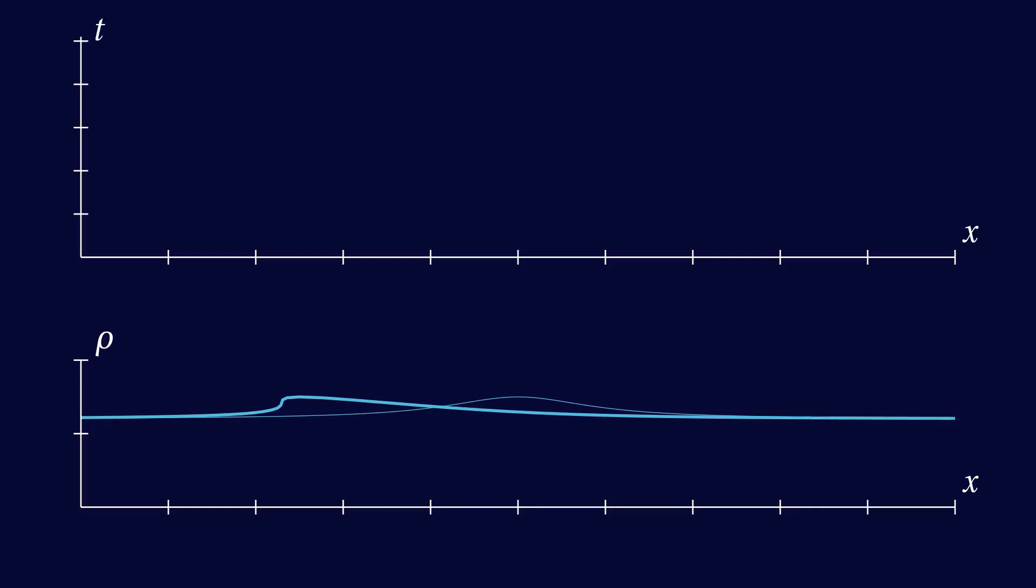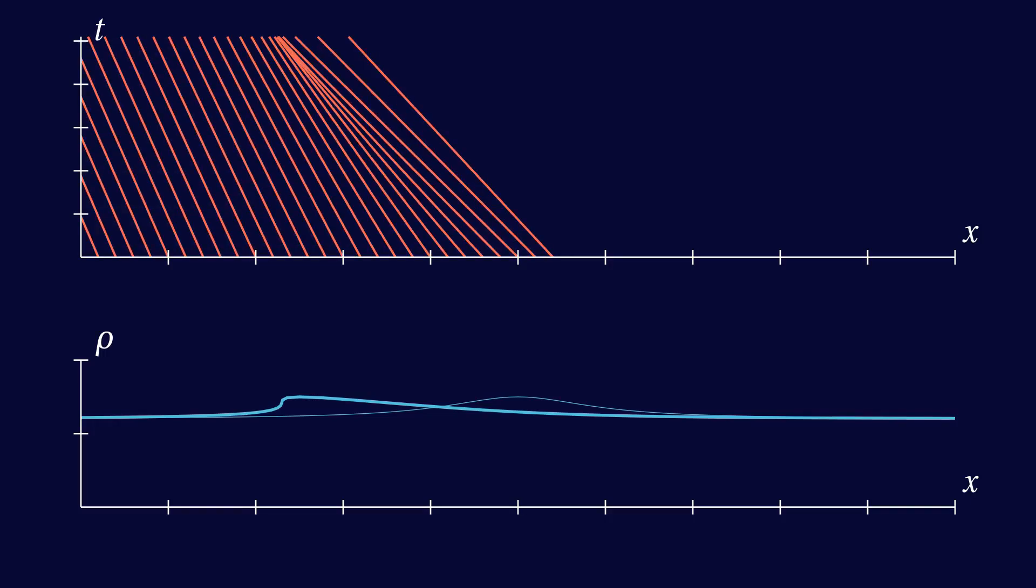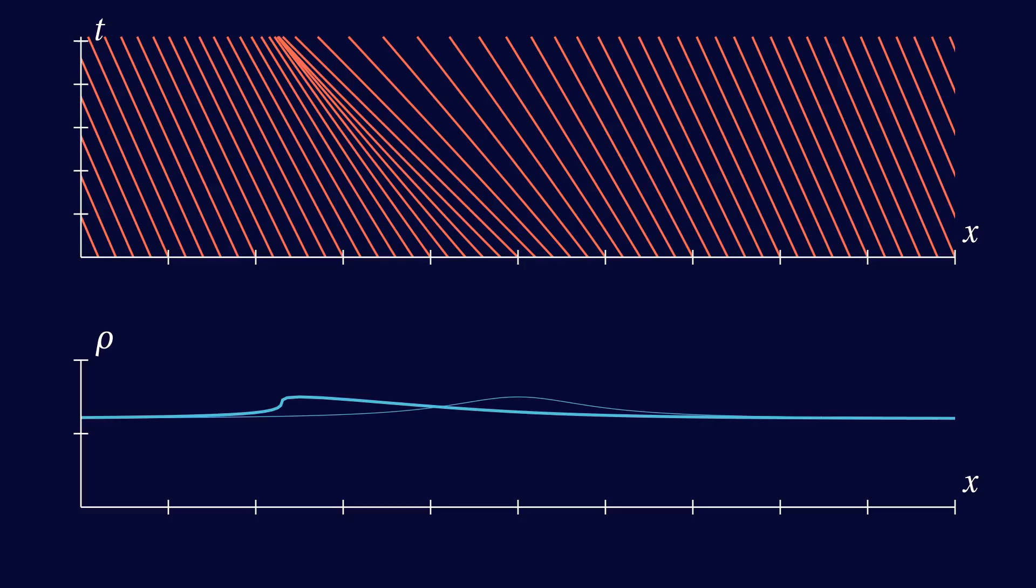Let's draw many different characteristics, so that the spacetime plot is almost filled with them. If we want to know the traffic density at a certain point, with spacetime coordinates x and t, all we have to do is to find a characteristic that goes through the point x,t, and the density at that point will be equal to the density at time 0, at the point where the characteristic originated.